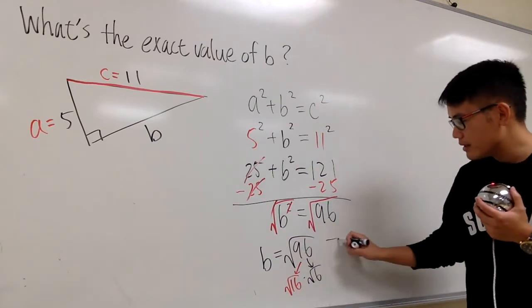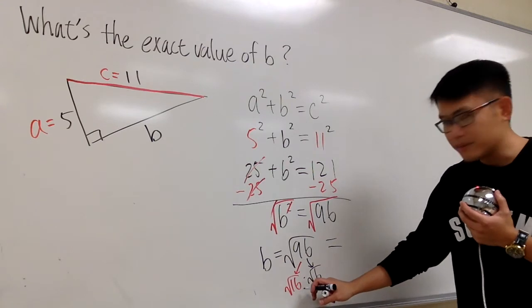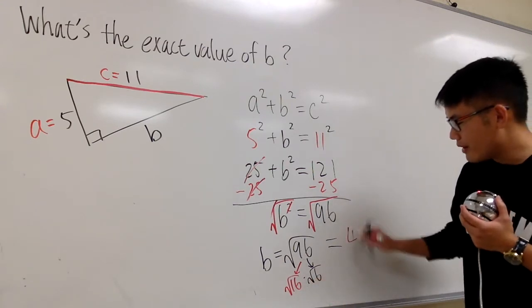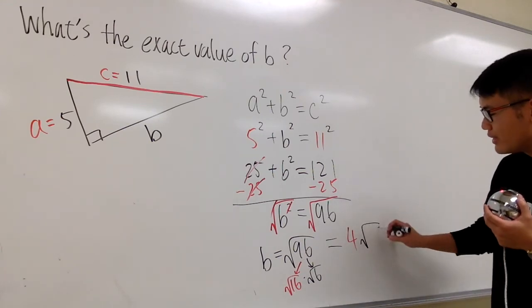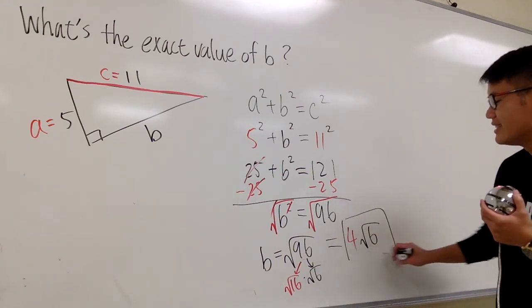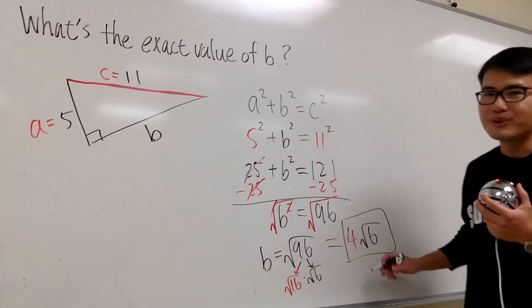√16 is just a nice number 4, and then this 6 is chilling in the square root. So 4√6. This is the b value. That's it.